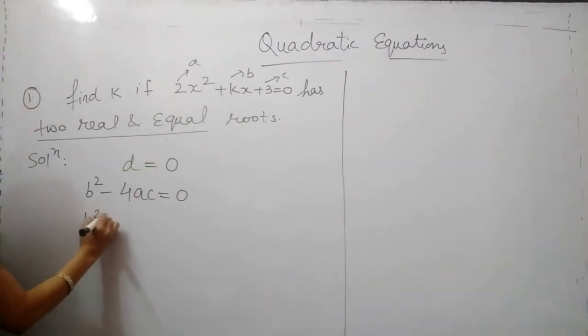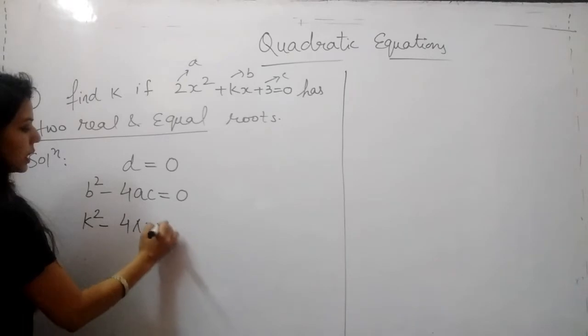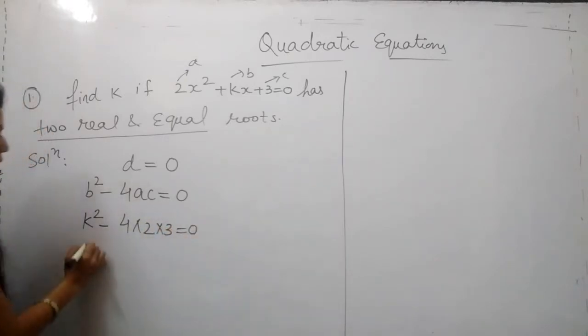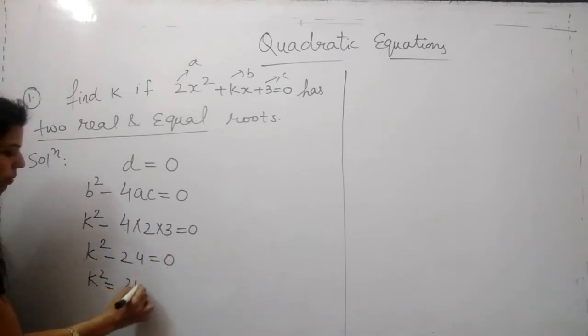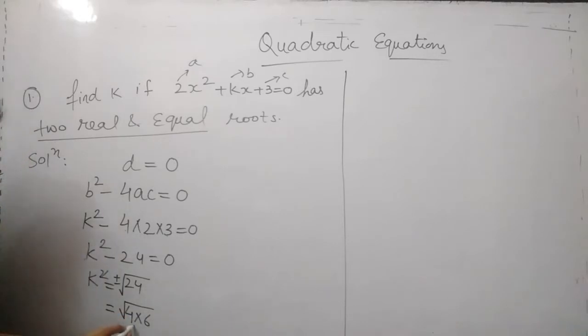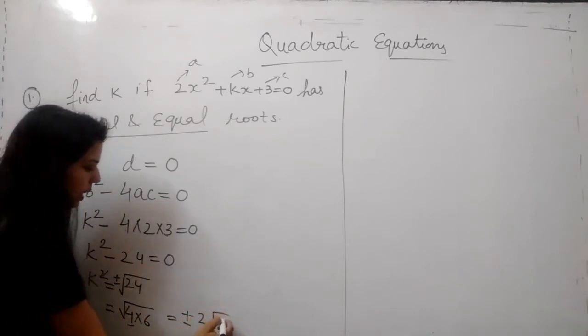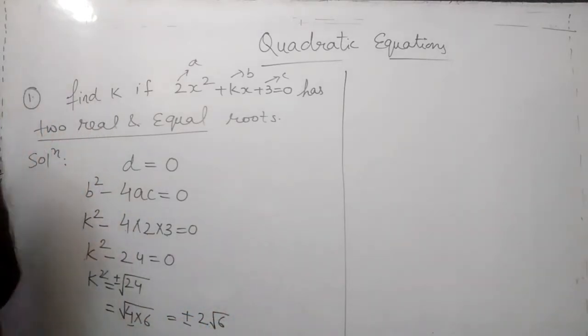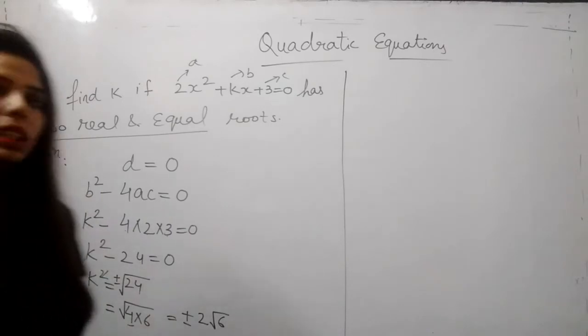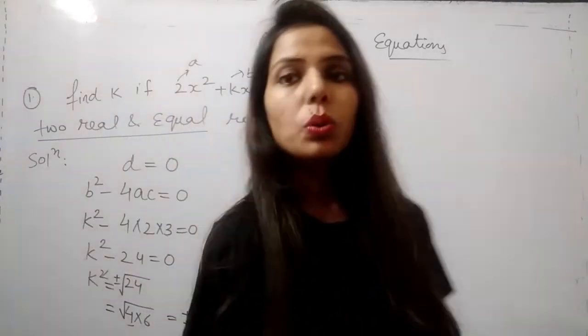Value of b square minus 4, a is 2 and c is 3. So here we go, k square minus 24 equal to 0. k square is equal to 24. If we remove the square it will be plus minus root 24, that is plus minus 2 root 6 will be the value of k for which the equation has real and equal roots.